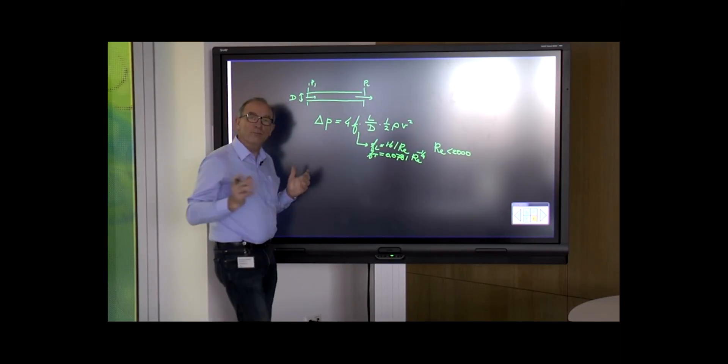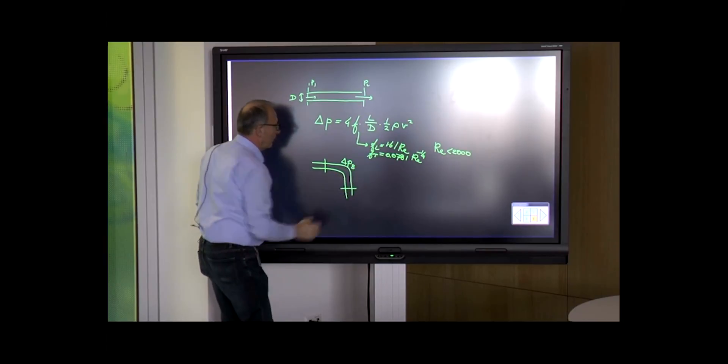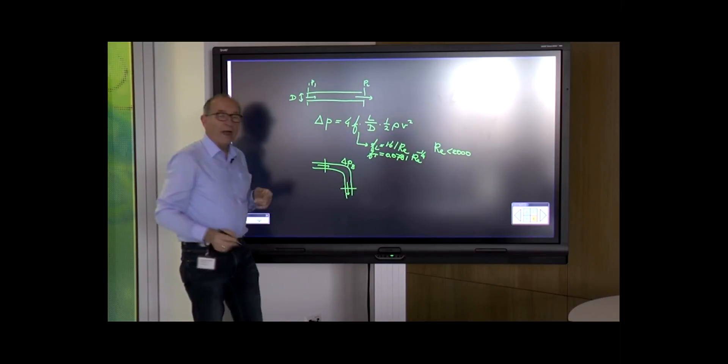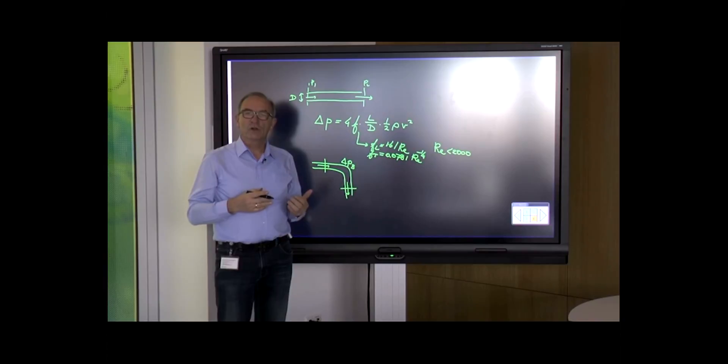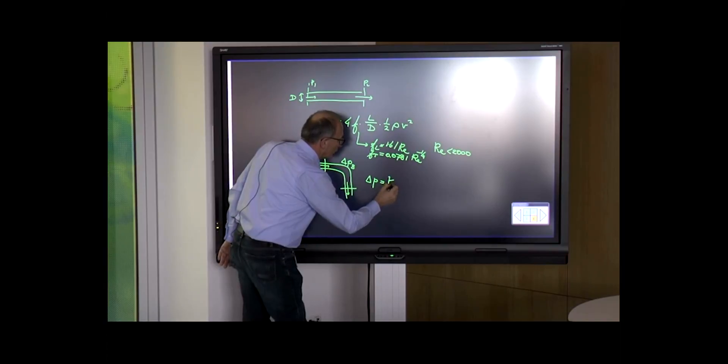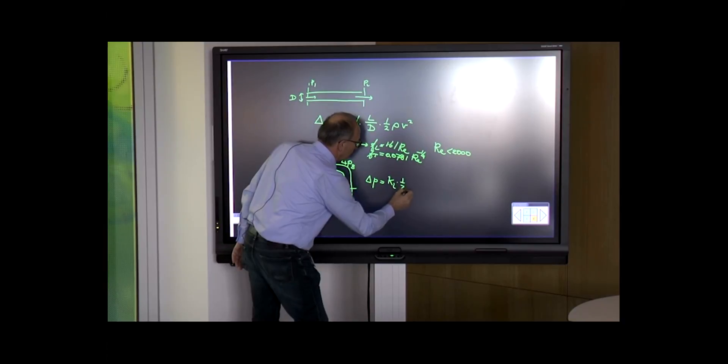How do we do this over a bend, for example? Assume we have a bend. How do we calculate the pressure loss over the bend? The fluid enters the bend and leaves the bend. We've seen that we can calculate the pressure loss.